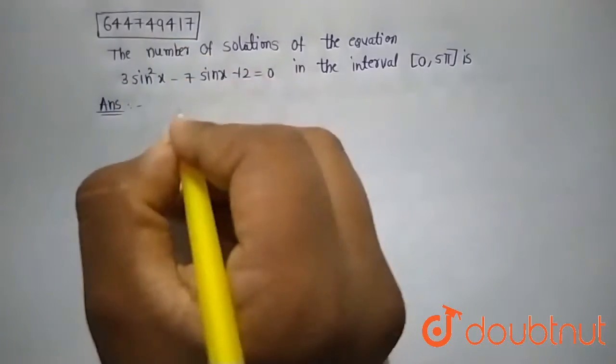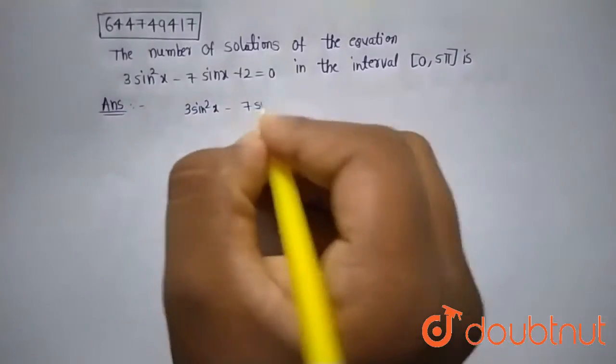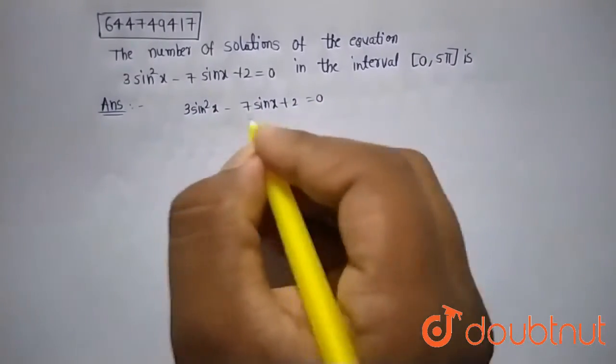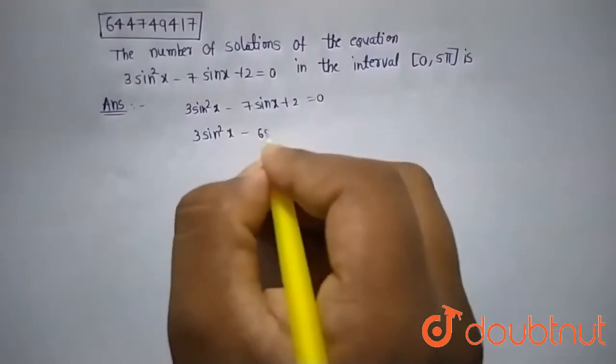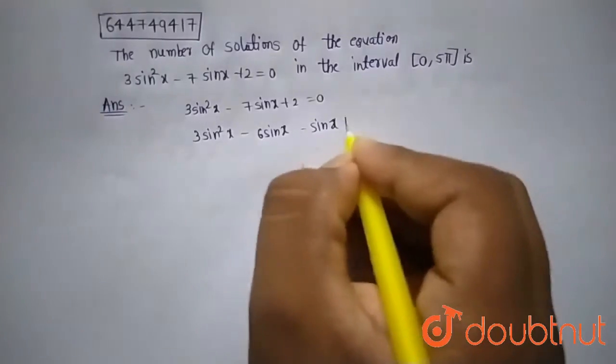So the given quadratic equation is 3sin²x - 7sin x + 2 = 0. Now what I will do is write 7sin x as 6sin x + sin x. So 3sin²x - 6sin x - sin x + 2 = 0.